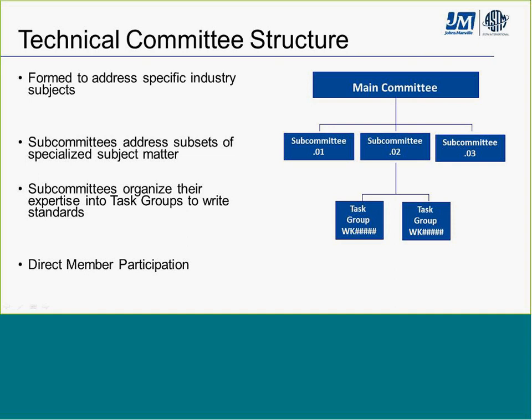This is the technical committee structure of an ASTM committee. All ASTM committees have a main committee with subcommittees, which address subsets of specialized subject matter. Subcommittees organize their expertise into task groups, and that's where direct member participation takes place. Members will become part of task groups to work on the development of new activities, new standards, or revisions to existing standards. Key participation points include joining subcommittees and task groups of interest and joining the ballot list for all ballot items — that is your voice in the process.